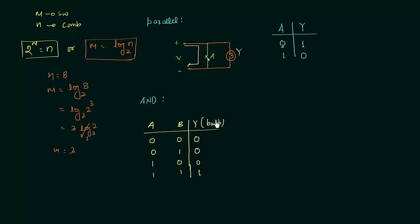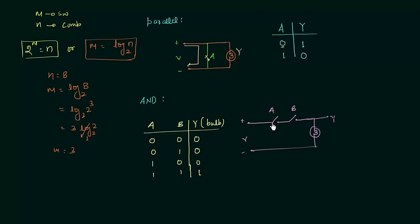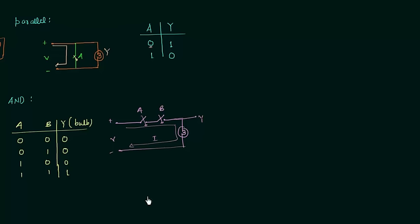Now we will try to obtain the circuit for this AND operation. We have two switches A and B in series, and the output is the bulb Y. When both A and B are open, no current flows through the bulb. When A is open and B is closed, no current flows either. Finally, when both A and B are closed, there is a current through the bulb and it glows. This is the simple series circuit for the AND operation.